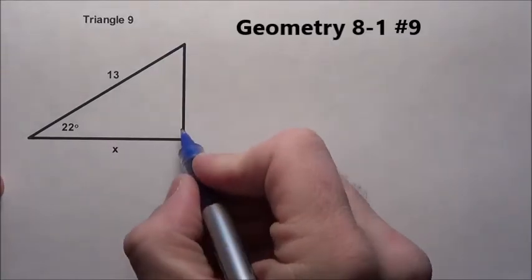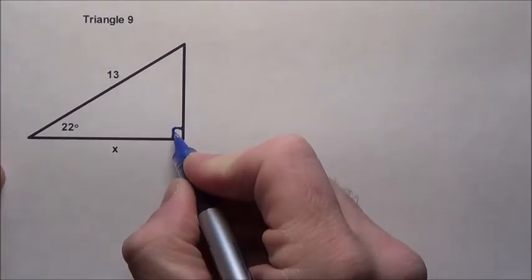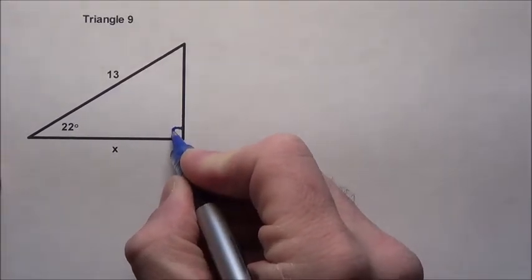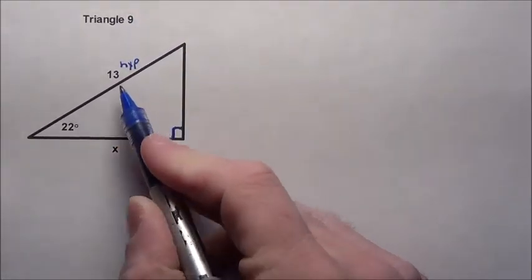Here's triangle 9. We have a right triangle with the right angle in the corner. Across from the right angle is always the hypotenuse, so we know this 13 is our hypotenuse.